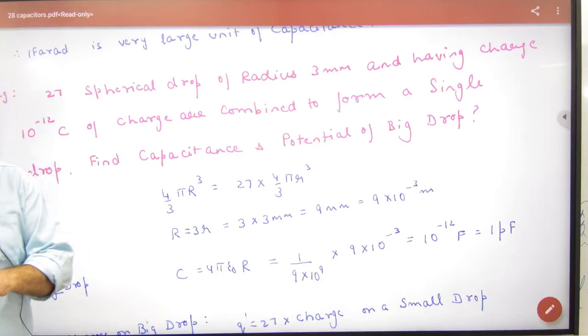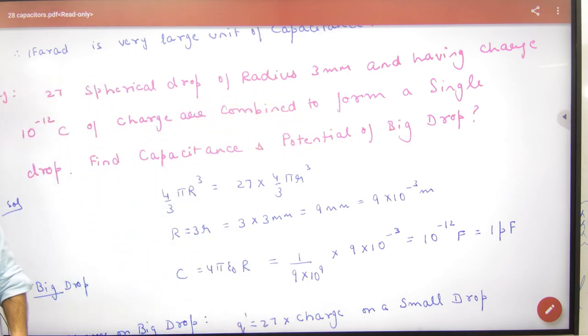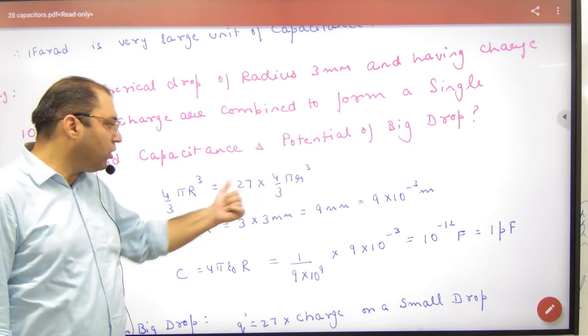This is a question we have already done. 27 spherical drops, which is given radius and having charge is given. Combine it. 27 drops combine it into a single drop, so the first work is what? Can both do?